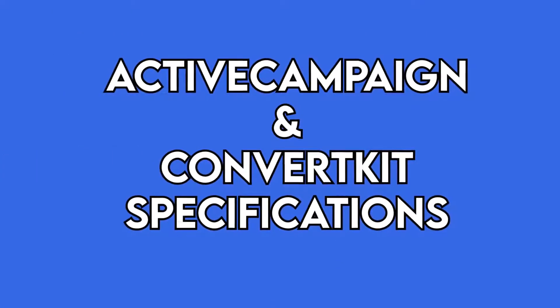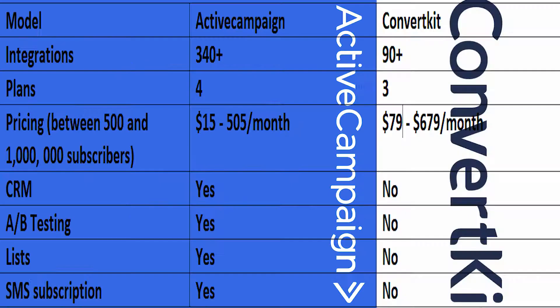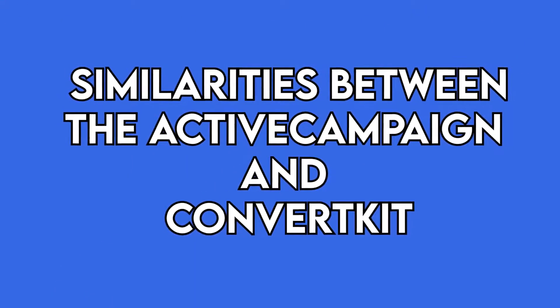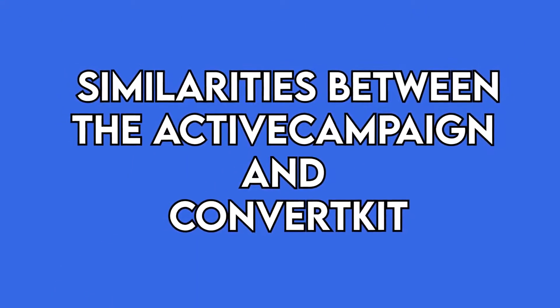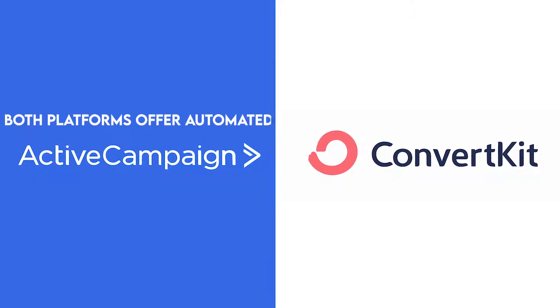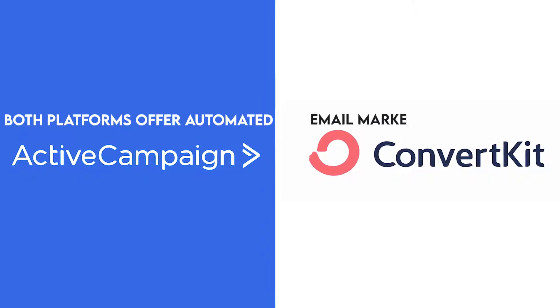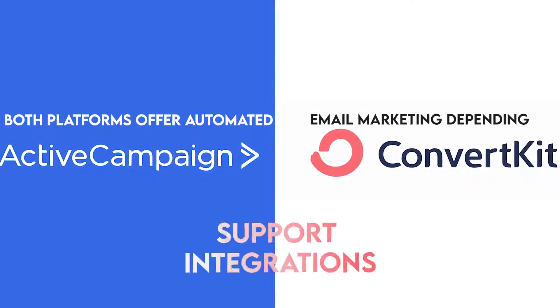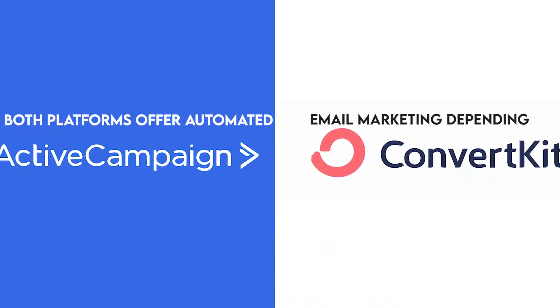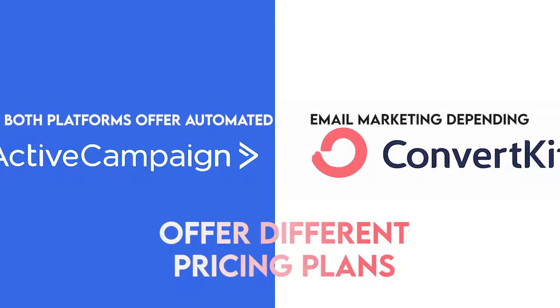In terms of specifications, Active Campaign offers more features, is cheaper, and supports over 340 integrations compared to ConvertKit's 90-plus integrations. Both platforms share similarities: they both offer automated email marketing depending on the tier, support integrations, and offer different pricing plans.